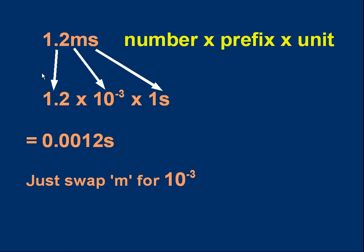Here's another example. 1.2 milliseconds means 1.2 - milli means 10⁻³ - and we have the unit at the end, second. All we did was swap the m for 10⁻³, and we've got the answer. We can write it out in normal decimal form if we want: 0.0012 seconds.